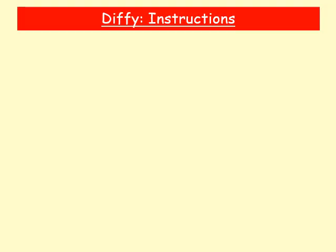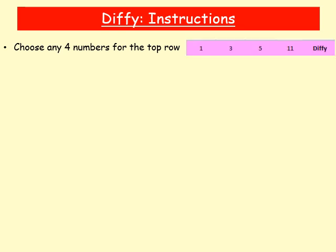Make sure you pause the video often as you need so that you're really clear on what you're doing here. So what you want to do to start off with is choose any four numbers for the top row. I would suggest keeping your numbers between 1 and 50 to start, but if you're feeling adventurous later on, you can play around with how high or low the numbers go. In this example, I've chosen 1, 3, 5, and 11, and we've got this heading column that just says Diffy.